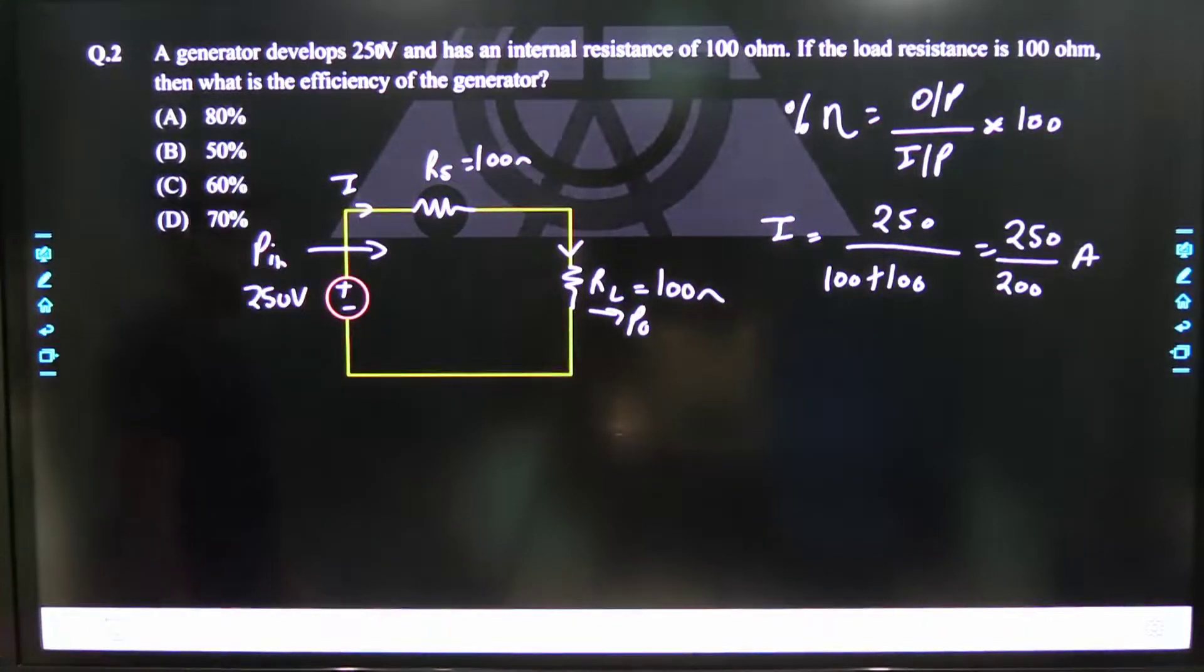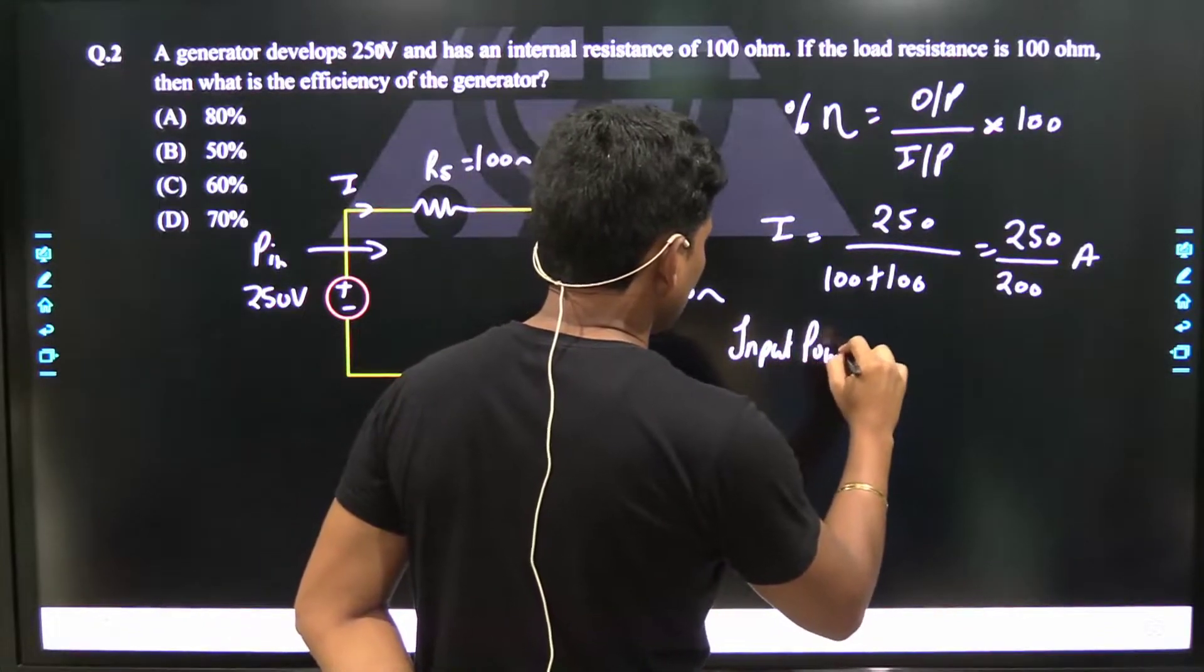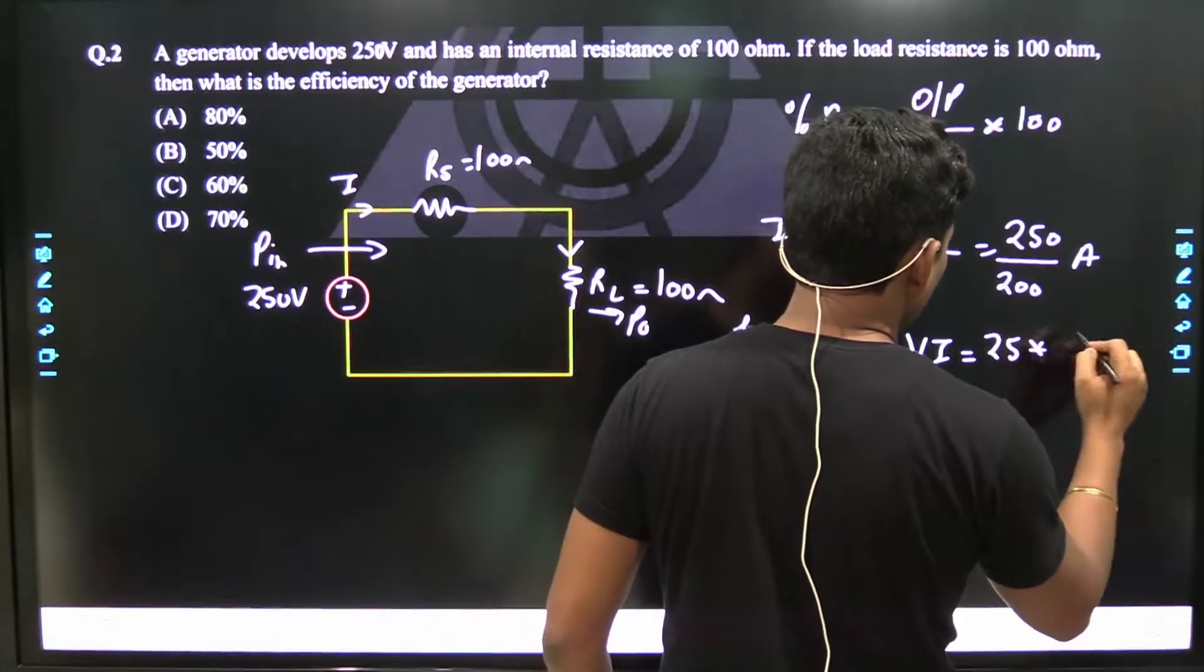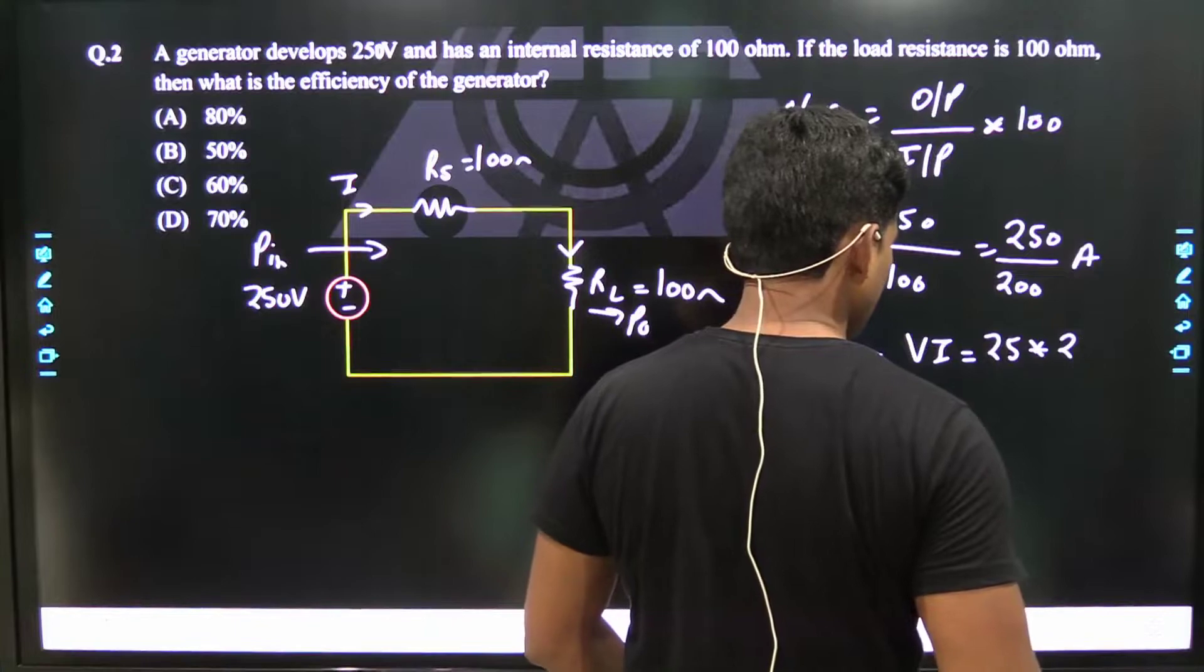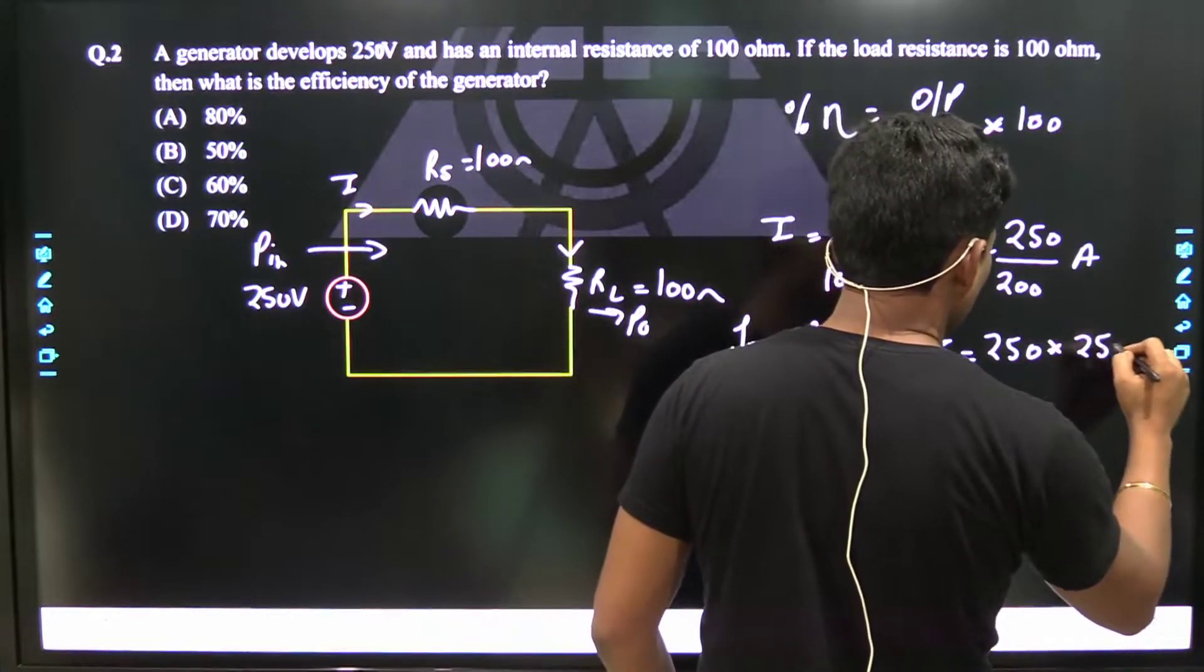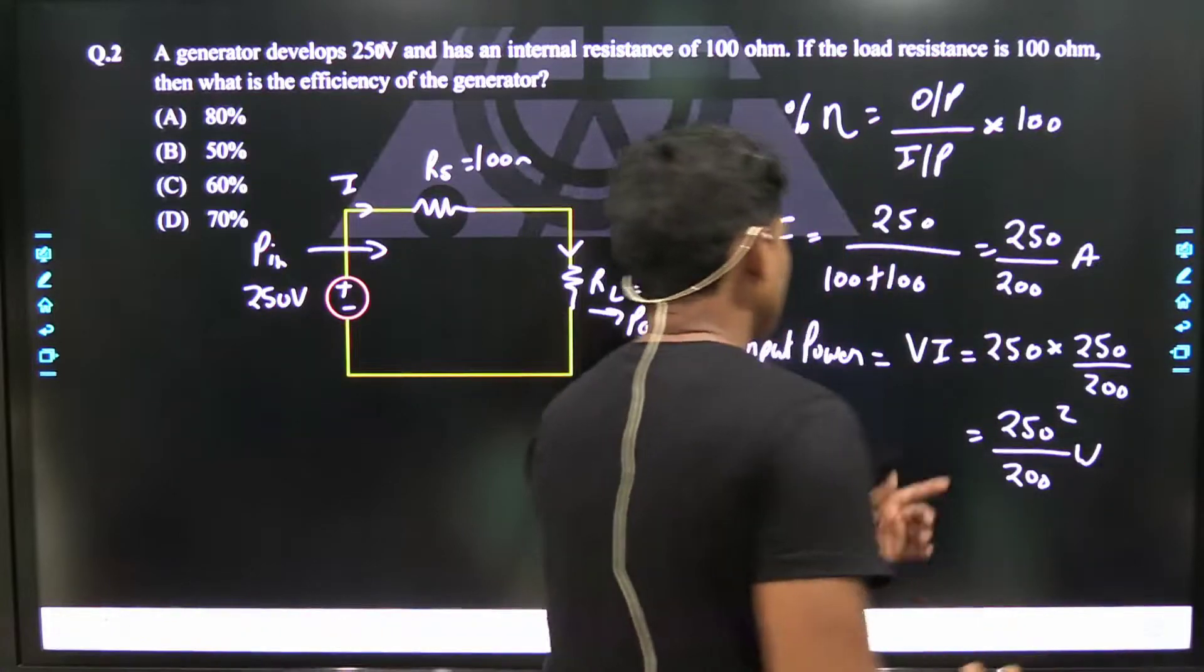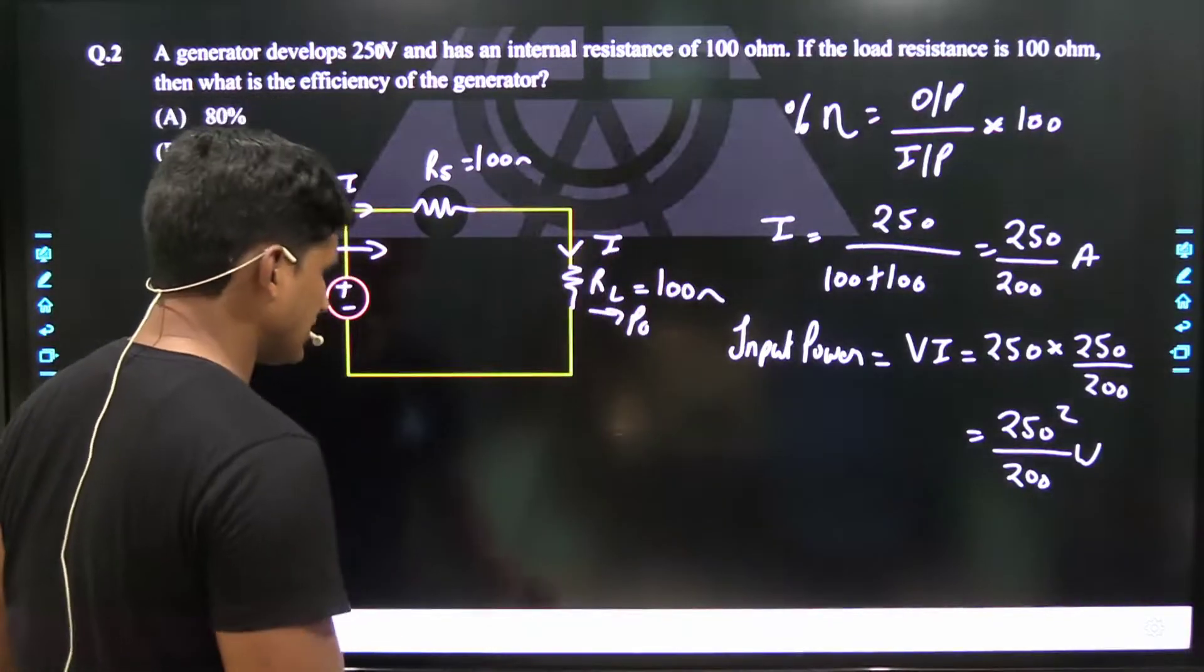Input power - what will be the input power? Input power is equal to V into I, that is equal to 250 into 250 upon 200. That is equal to 250 square by 200 watt.